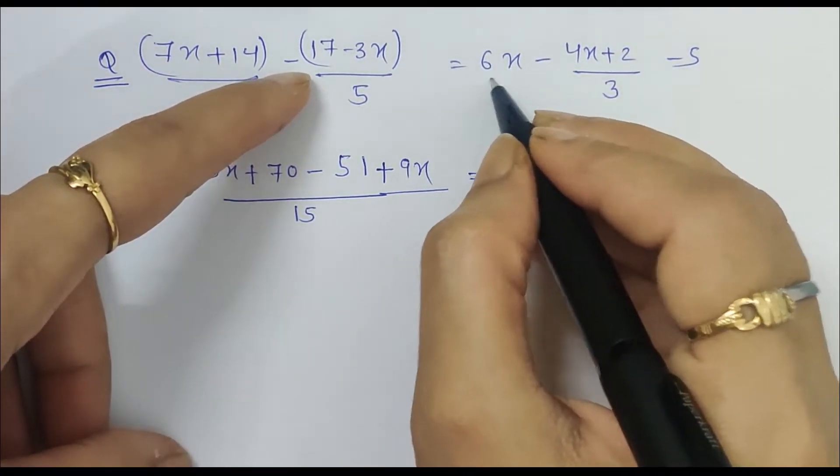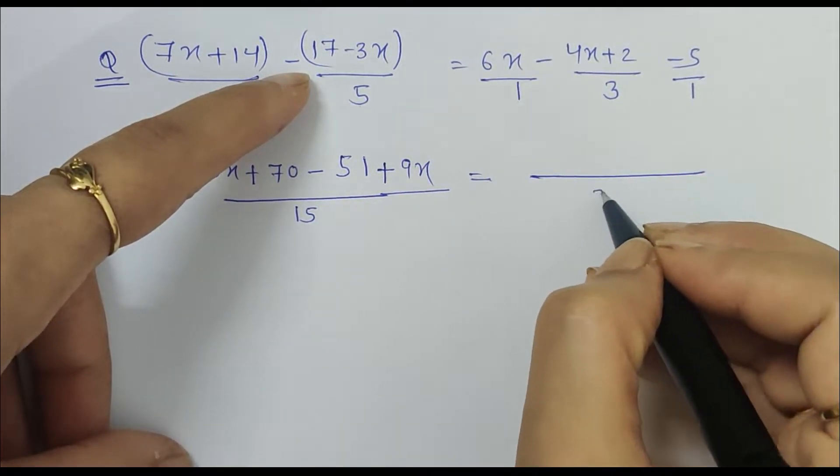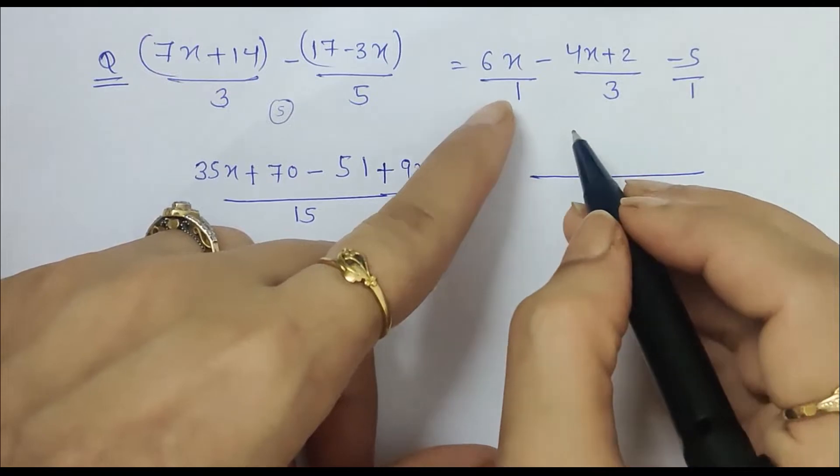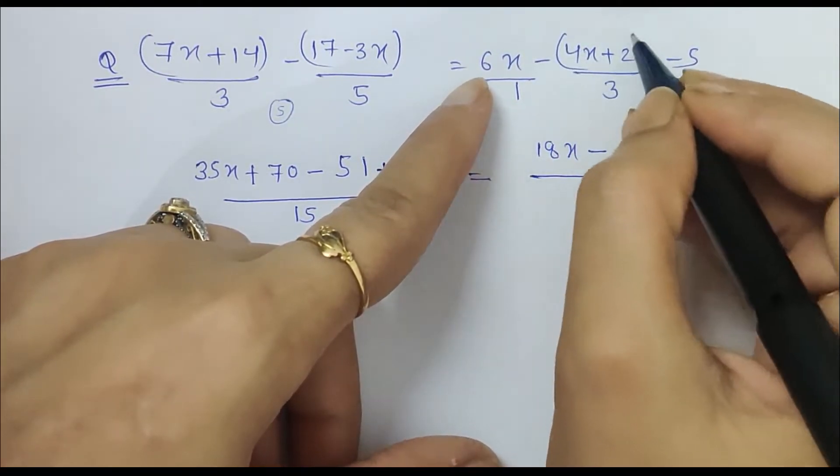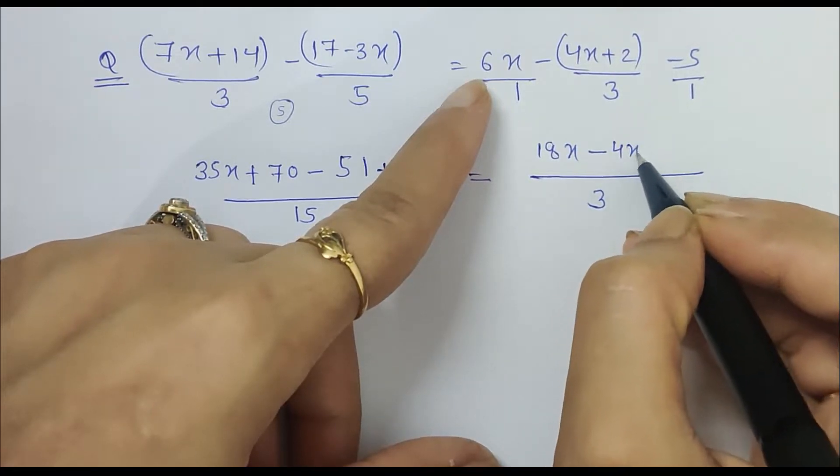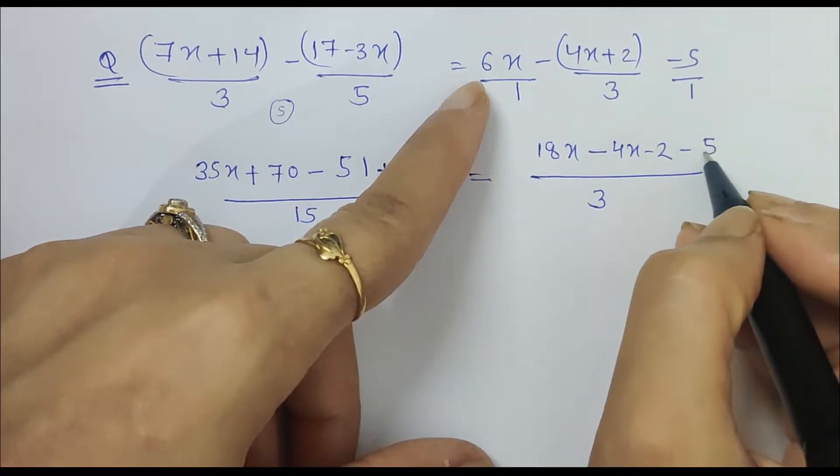This is equal to, here 1 is in the denominator, so 1 and 3 LCM is 3. Now 1 times 3 is 3, so 3 into 6 is 18x, minus 3 times 1 is 3, so minus 4x minus 2, minus 1 times 3 is 3, so 3 times 5 is 15.